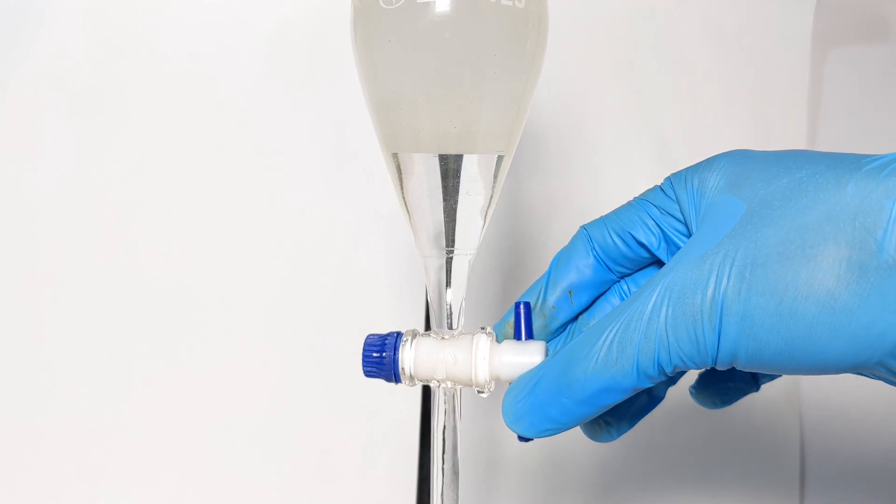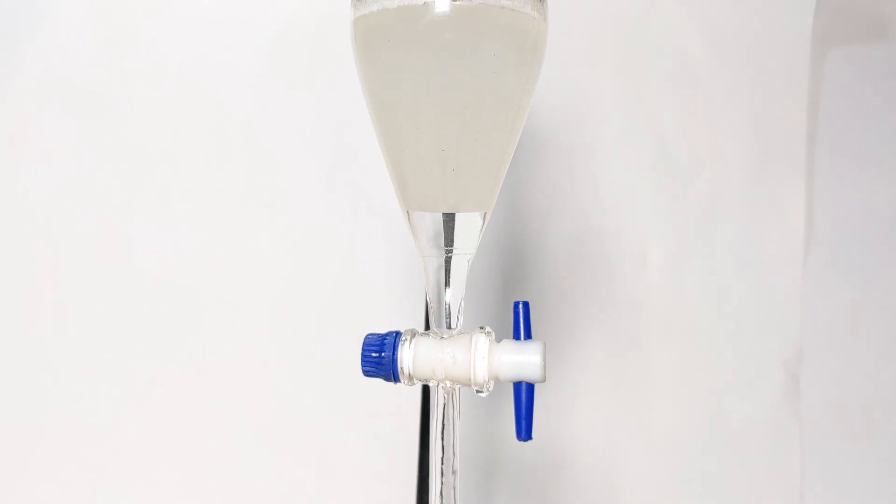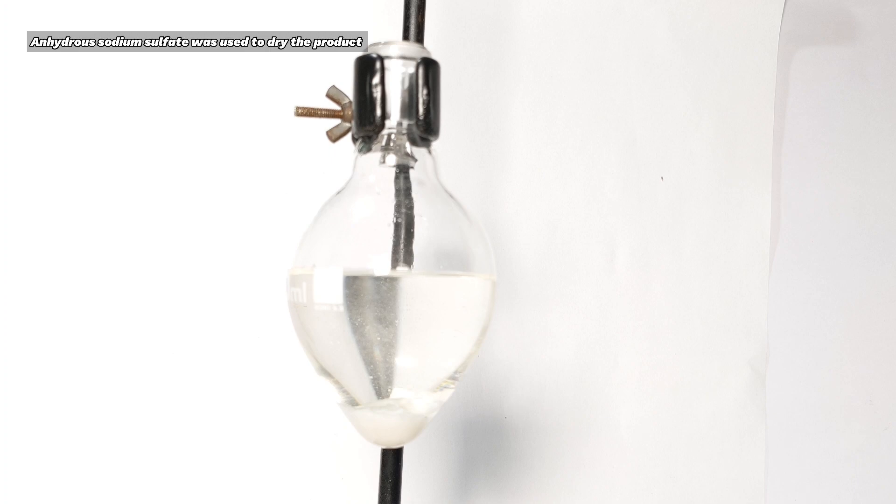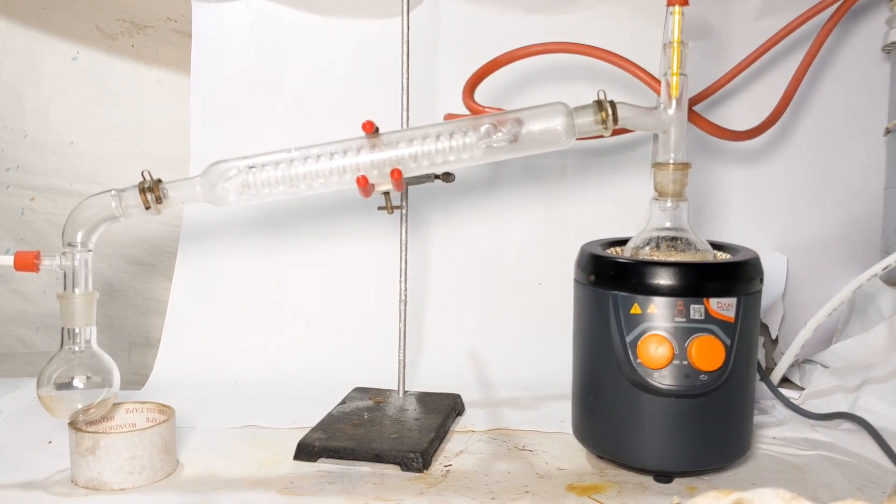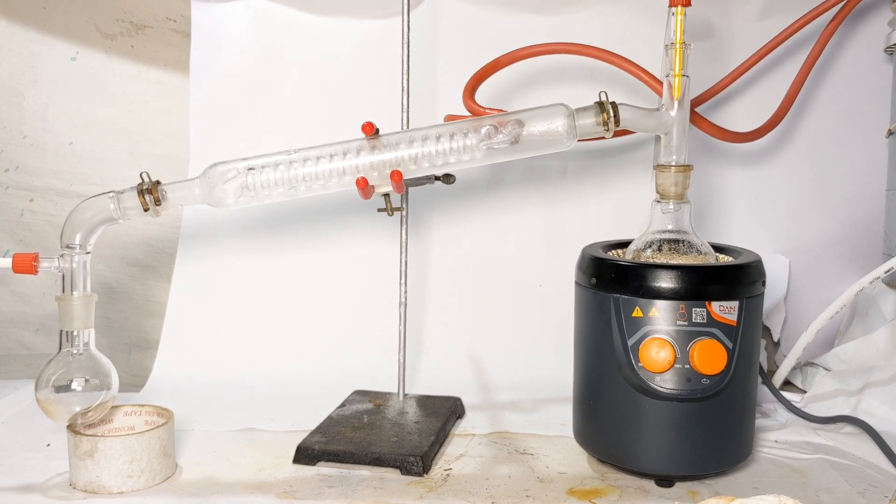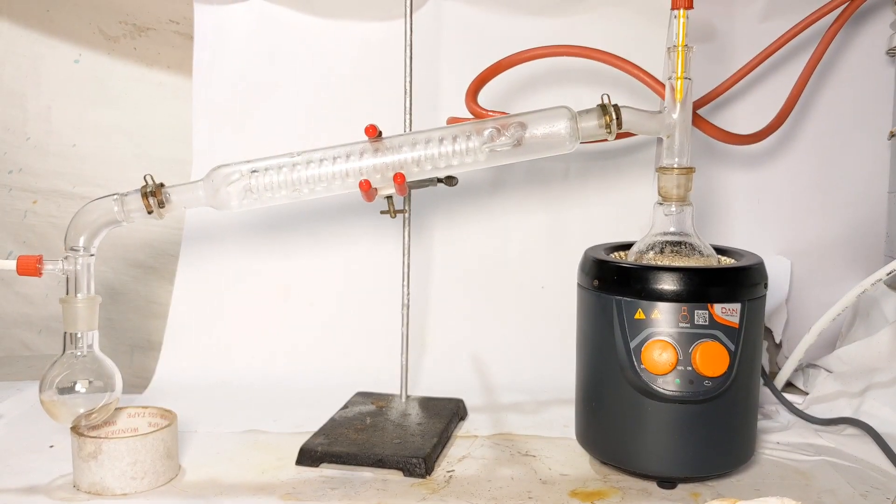The crude product was then dried using anhydrous sodium sulphate and finally we did a simple distillation. Initially some water boiled over at around 100 degrees C and when the temperature rose to around 115 to 120 degrees C, butanol which was left behind unreacted boiled over.